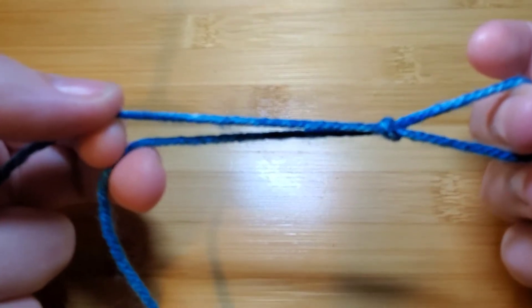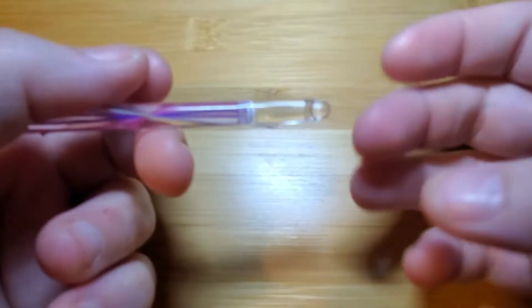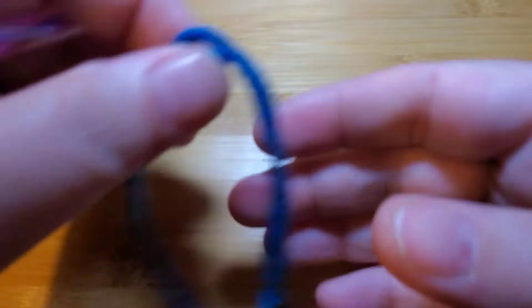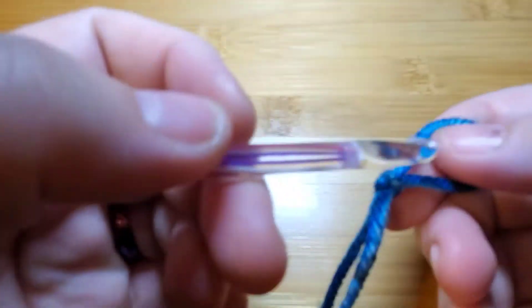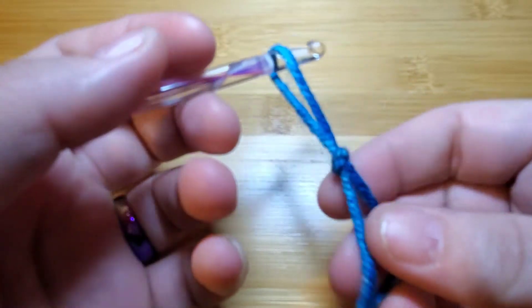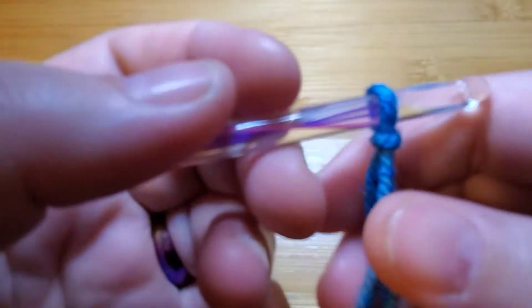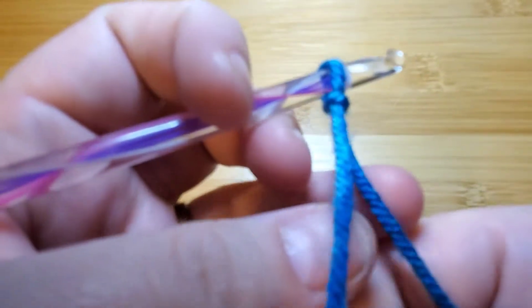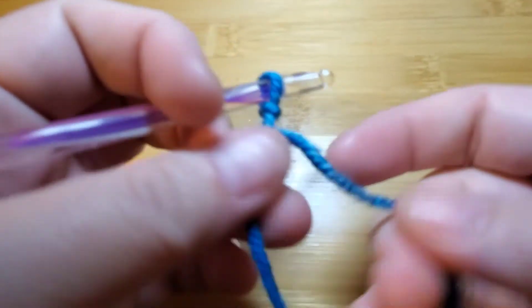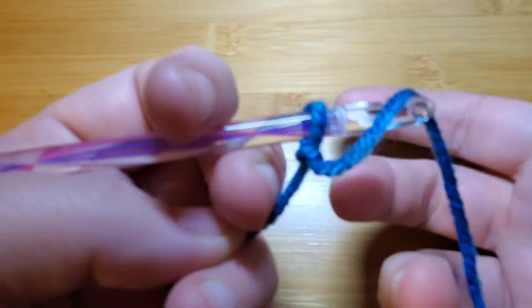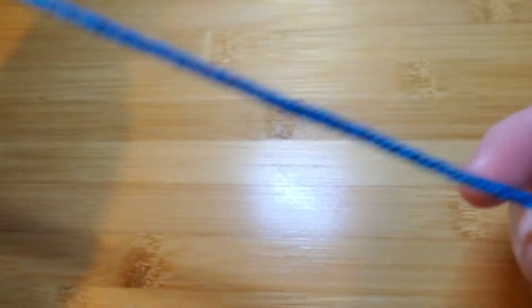Then you put your hook in that loop. Pull on the one that goes back to the skein and that tightens it down nicely. Next you're gonna bring that...